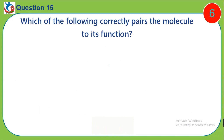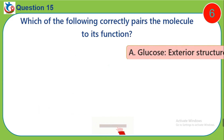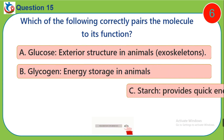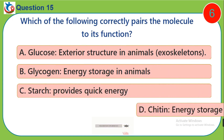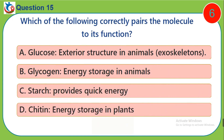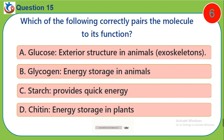Question 15. Which of the following correctly pairs the molecule to its function? A. Glucose — a rigid structure in animals called exoskeleton. B. Glycogen — energy storage in animals. C. Starch — provides quick energy. D. Chitin — energy storage in plants.